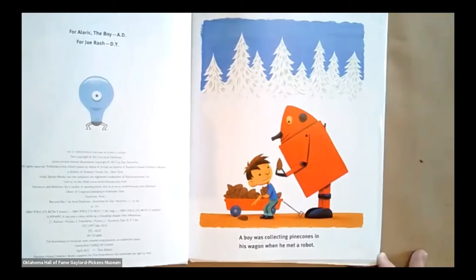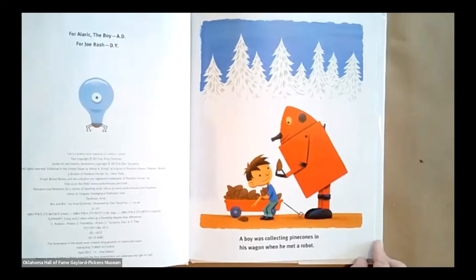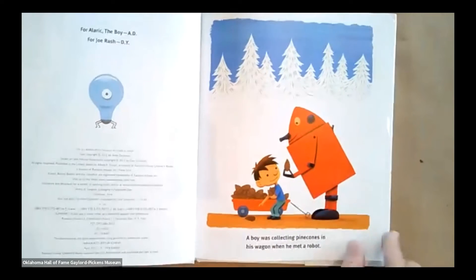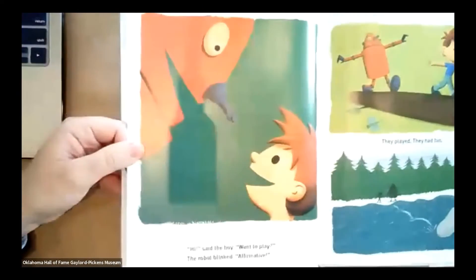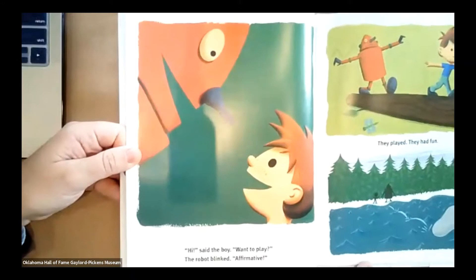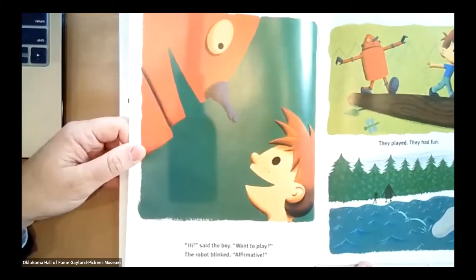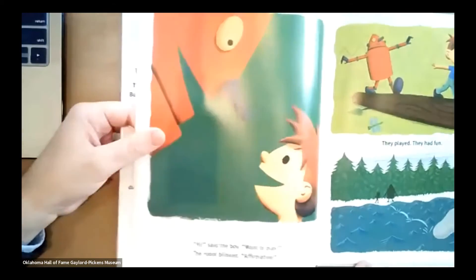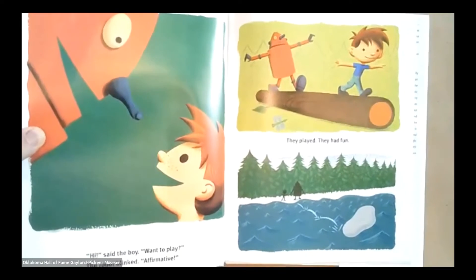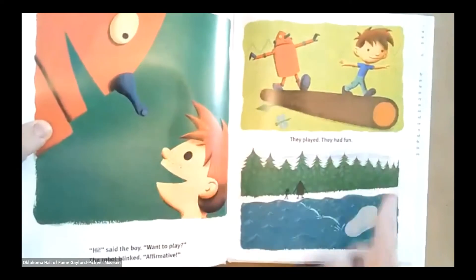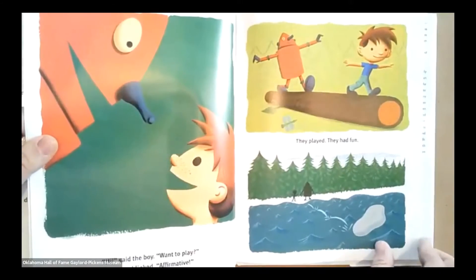A boy was collecting pine cones in his wagon when he met a robot. See, there's a robot. He even collected a pine cone for him. Hi, said the boy. Want to play? The robot blinked. Affirmative. They played. They had fun. There they are. They're walking across a log in the forest. They're skipping stones on the lake. All sorts of fun.